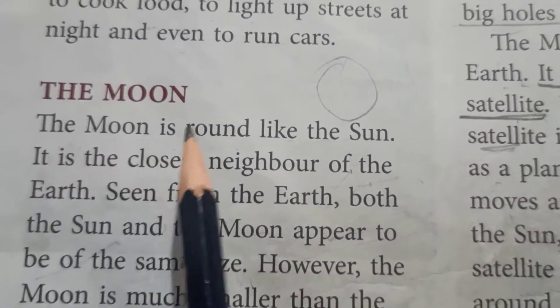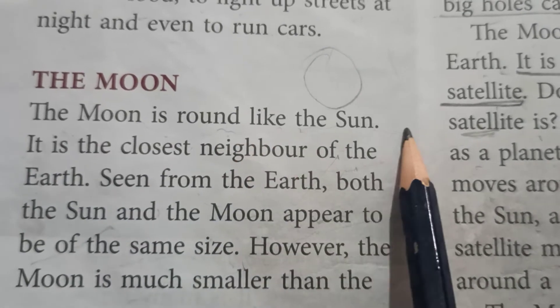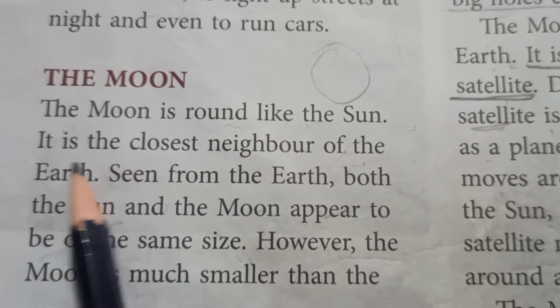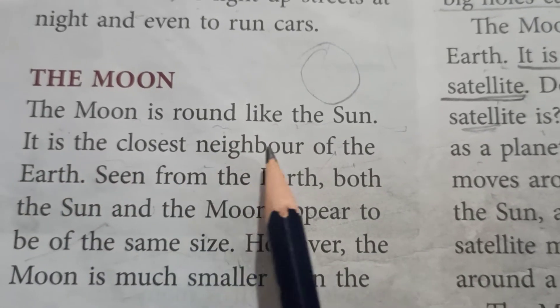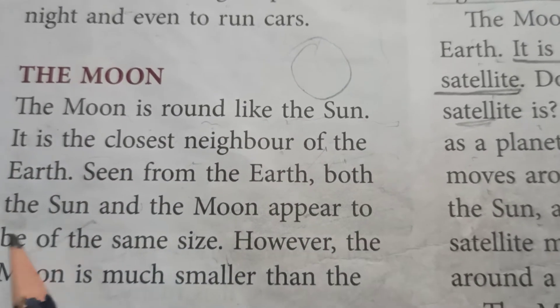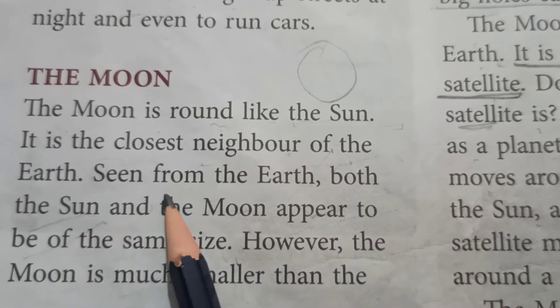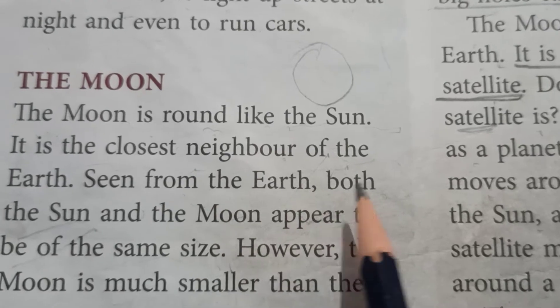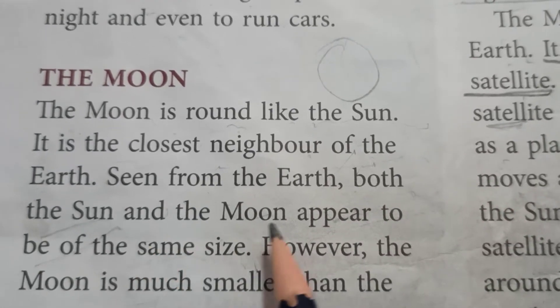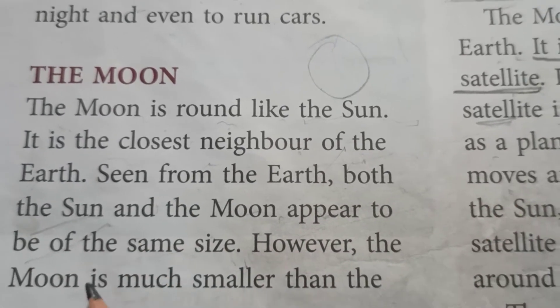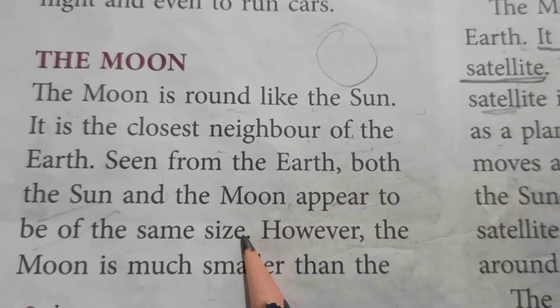The moon is round like the sun. It is the closest neighbor of the earth. Seen from the earth, both the sun and the moon appear to be the same size.